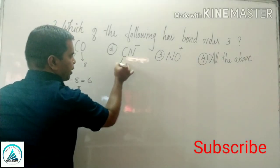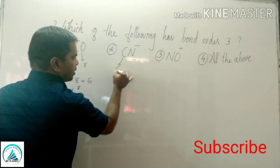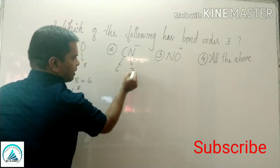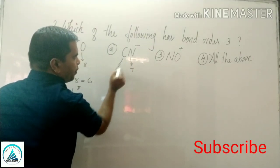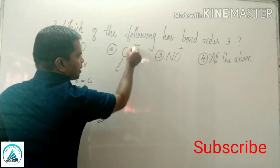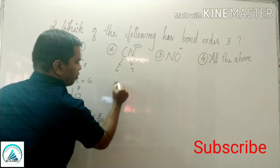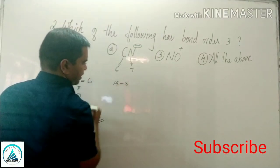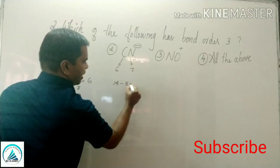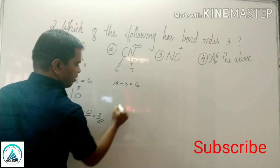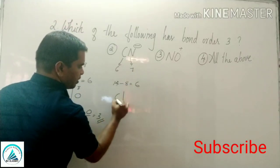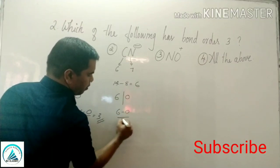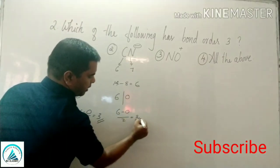CN minus: carbon atomic number 6, nitrogen atomic number 7. 6 plus 7 = 13 electrons, plus 1 for the negative charge = 14 total electrons. Again remaining 6 electrons after subtracting 8. Part 1 = 6, part 2 = 0. Bond order = (6 minus 0) divided by 2 = 3.